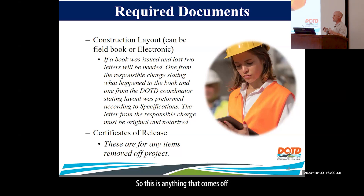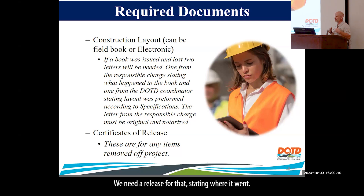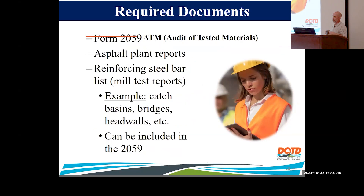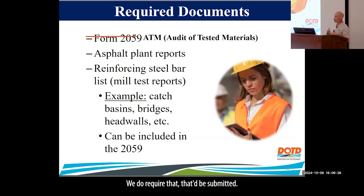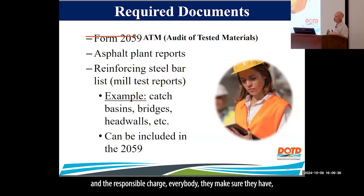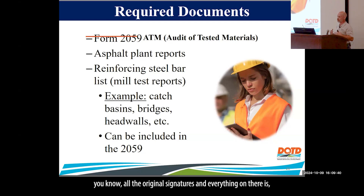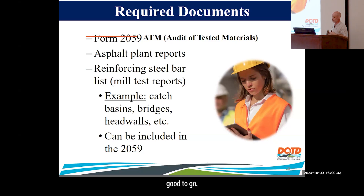Certificates of release: anything pulled off the project requires a release stating where it went, what item it was paid under, and all of that. The 2059 — now called the ATM, Audit of Tested Materials — must also be submitted with all the original signatures from the lab engineer, the coordinator, and the responsible charge.